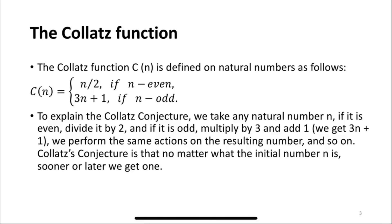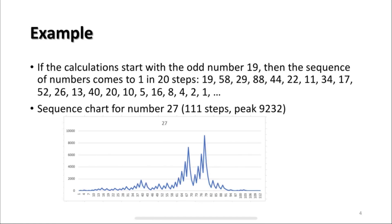To explain the Collatz conjecture, we take any natural number n: if it is even, divide it by 2, and if it is odd, multiply by 3 and add 1 to get 3n + 1. We perform the same actions on the resulting number, and so on. The Collatz conjecture is that no matter what the initial number n is, sooner or later we get 1. If the calculations start with the odd number 19, then the sequence of numbers comes to 1 in 20 steps.